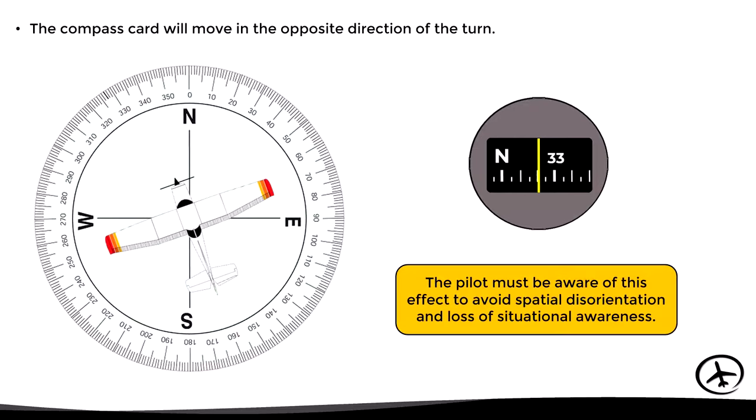This happens because the compass card is inverted, and it is important for the pilot to be aware of this effect to avoid spatial disorientation and loss of situational awareness. Since under high workloads or when there are not enough visual references, the pilot may believe that they are making a turn to the opposite side.